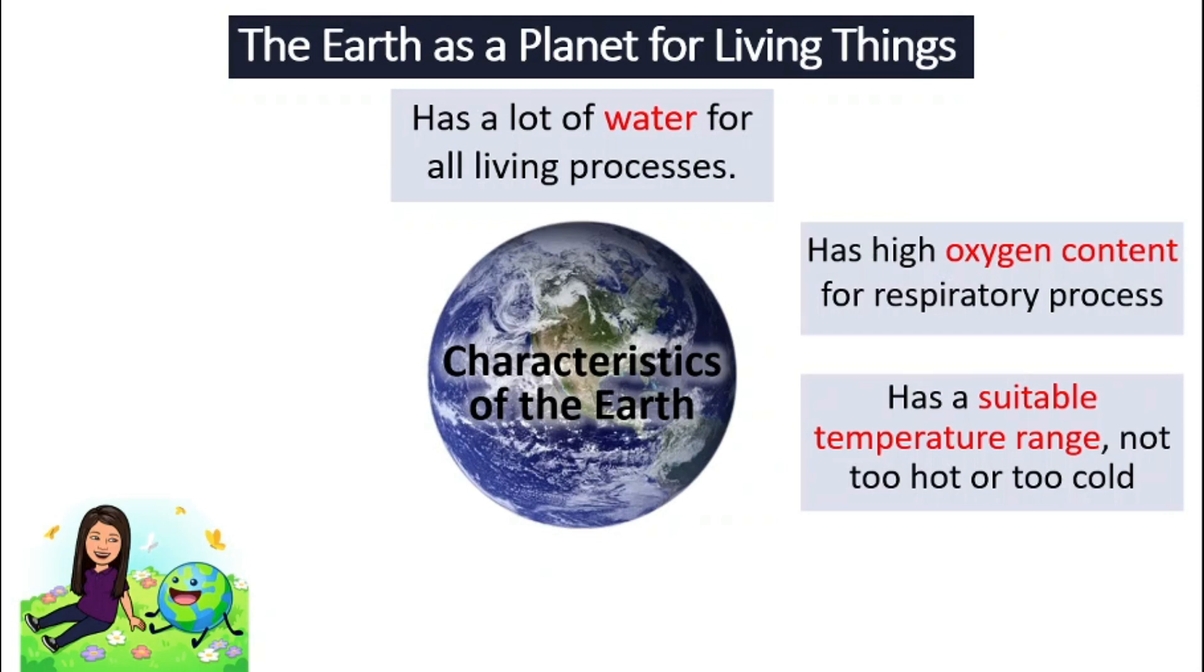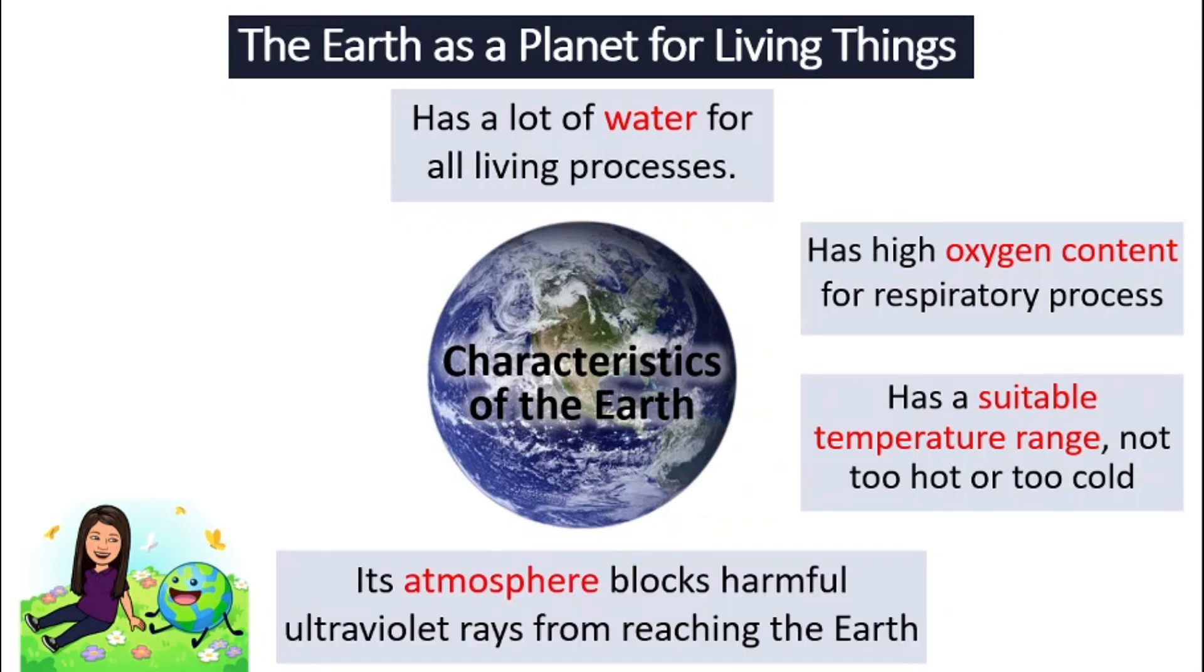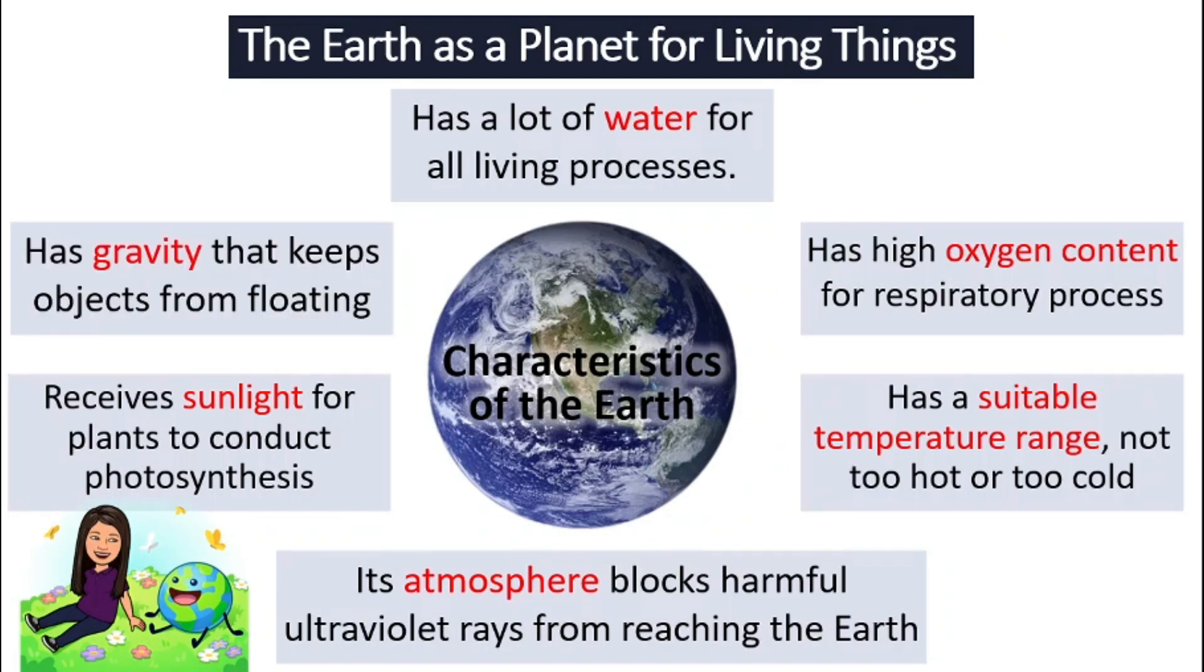Our atmosphere also blocks away the very dangerous ultraviolet rays from reaching us and also we receive enough sunlight for our plants to conduct photosynthesis and we have gravity to help keep us from floating away to the outer space so that we are not flying around and floating around. It will be very annoying. It will be very difficult to do anything.